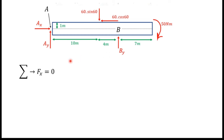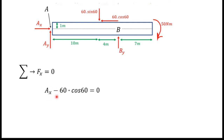First, I will take the sum of all horizontal forces. There are two horizontal forces: Ax and 60 cos 60. Ax is in the direction we consider, so I write it as positive. The 60 cos 60 force is in the opposite direction, so I put a minus sign. Simplifying, cos 60 equals 1/2, so I get Ax equals 30 Newtons.